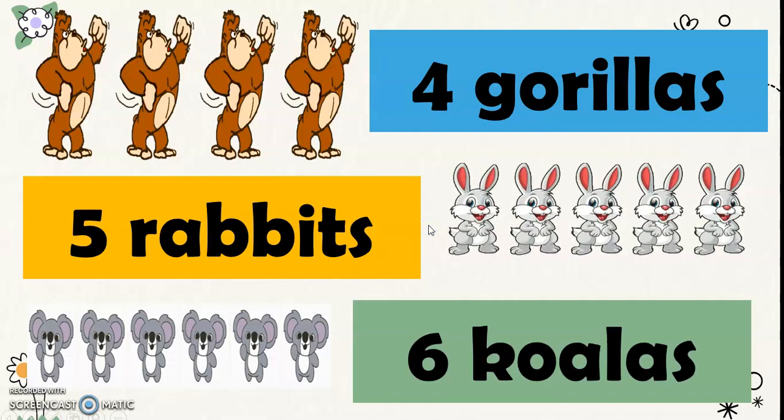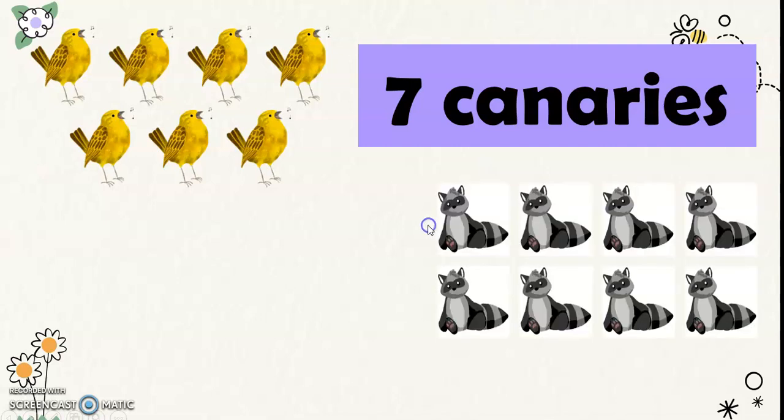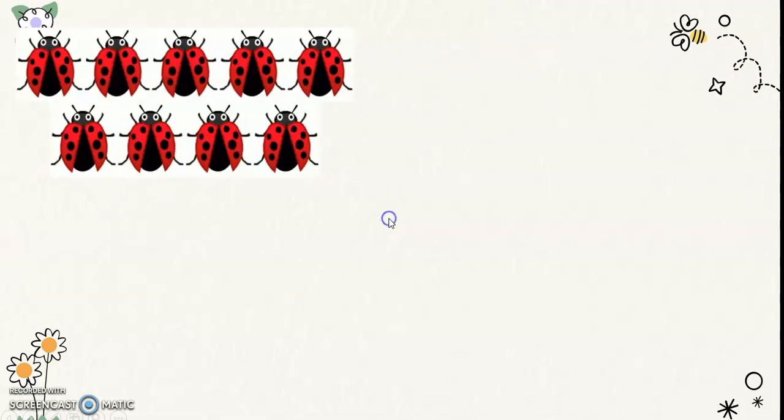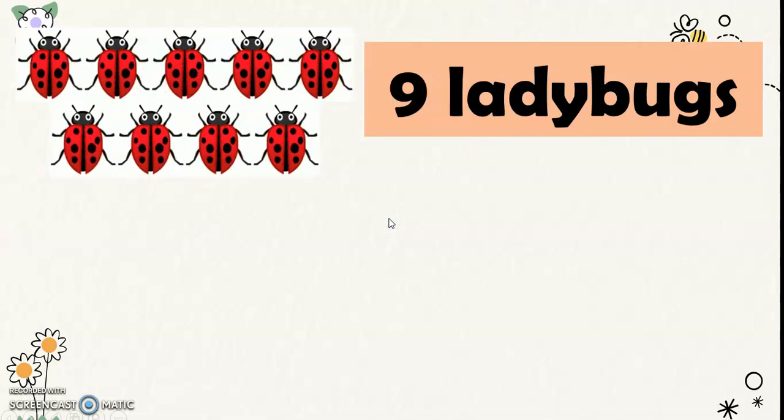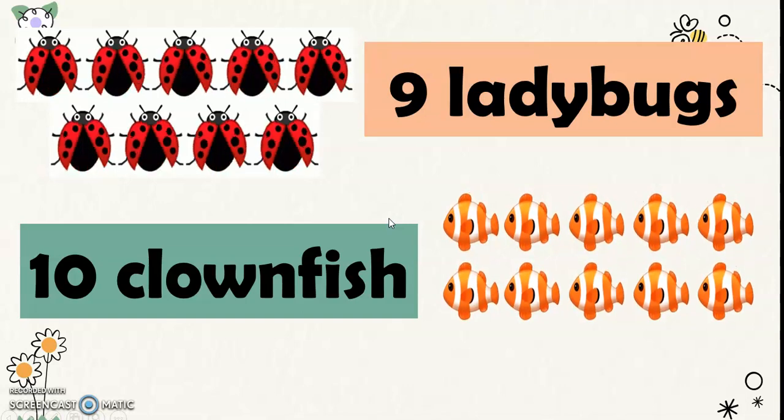These are 6 koalas. These are 7 canaries. These are 8 raccoons. These are 9 ladybugs. And these are 10 clownfish. There you have it.